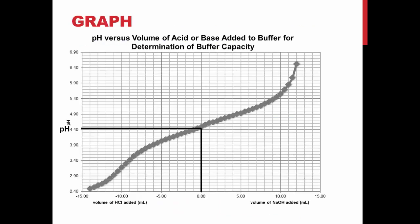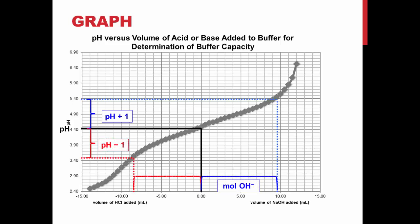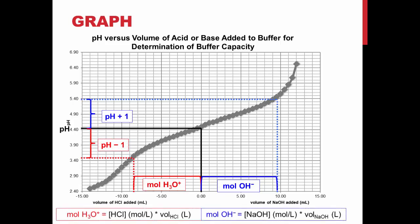The pH and volume data you obtained will be plotted as shown. The buffer capacity can be determined from this graph by finding the volumes of hydronium or hydroxide added to the solution that caused a pH change from the initial pH of the solution to minus or plus one.